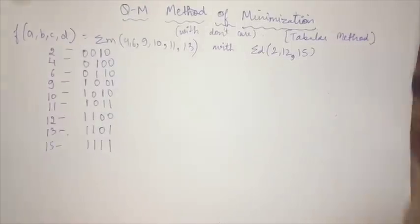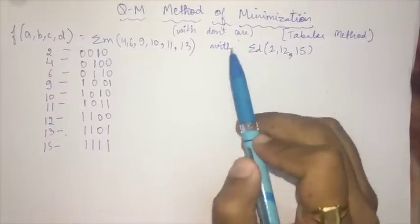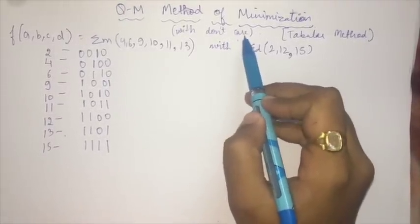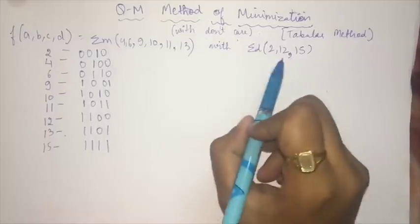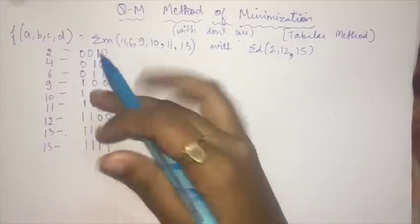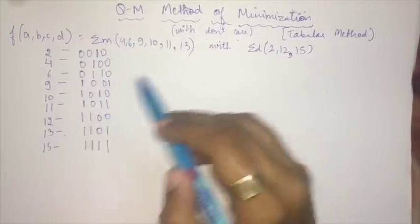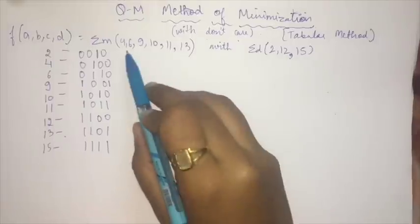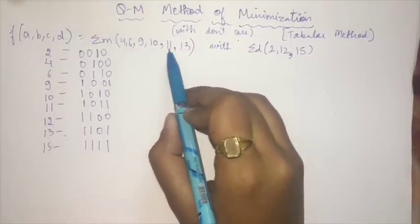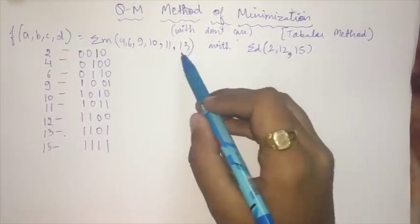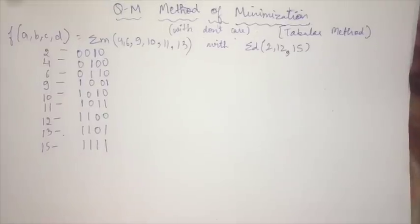We solve a question which involves don't cares. First of all, we write down the minterms given to us, including the don't cares. So: 2, 4, 6, 9, 10, 11, 12, 13, and 15.